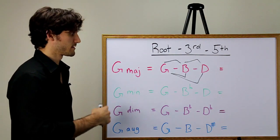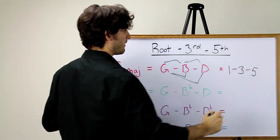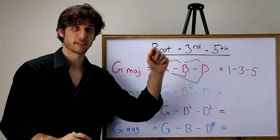And we can write this as one, three, five. G is one, B is three, D is five.